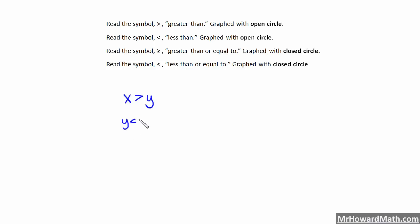So y is less than x is an equivalent statement. From left to right this is read y is less than x; from right to left it's x is greater than y — same as the other statement, except we just have the bigger variable on the left side instead of the right. So it's pretty straightforward, but you have to remember which symbol is which.